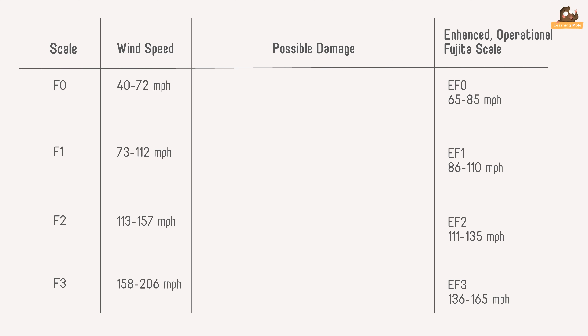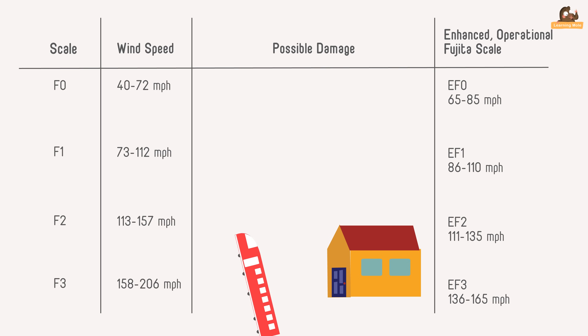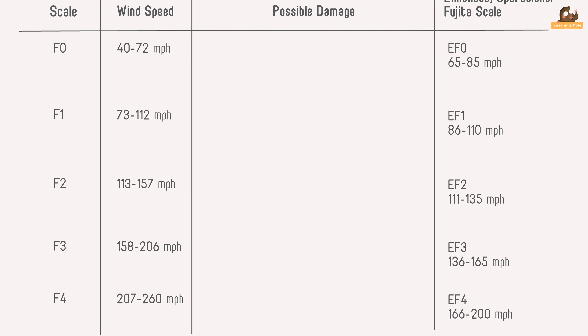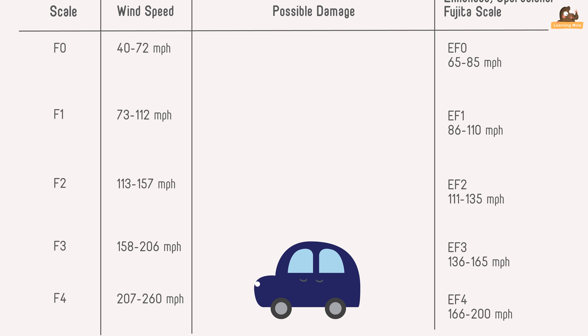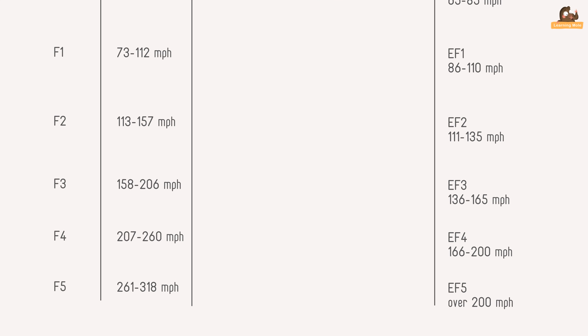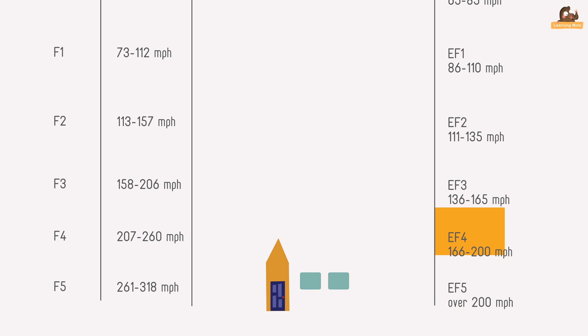F3: 158 to 206 miles an hour — severe damage, trains overturned, cars lifted off the ground, strong built homes have outside walls blown away. F4: 207 to 260 miles an hour — devastating damage, houses levelled leaving piles of debris, cars thrown 300 yards or more. F5: 261 to 318 miles an hour — incredible damage, strongly built homes completely blown away.